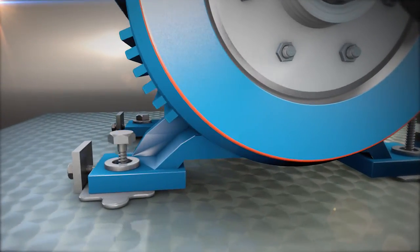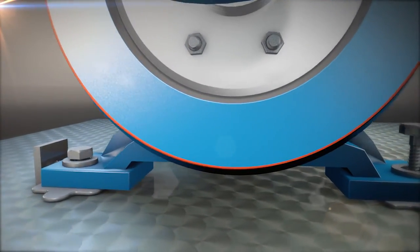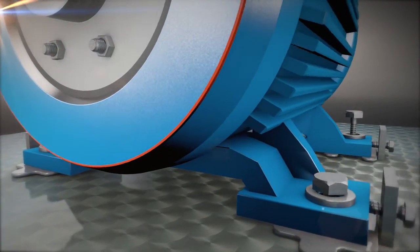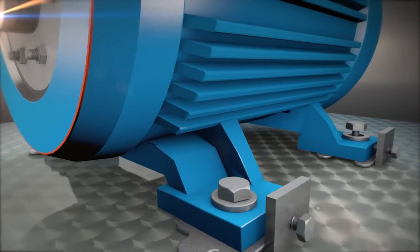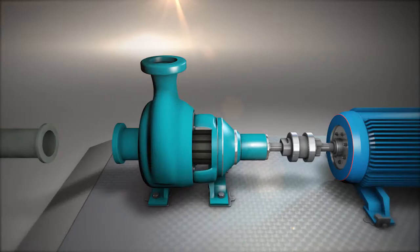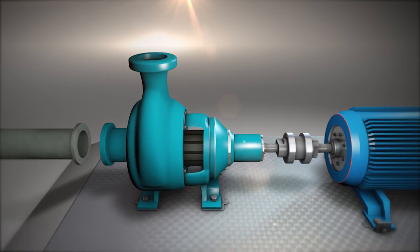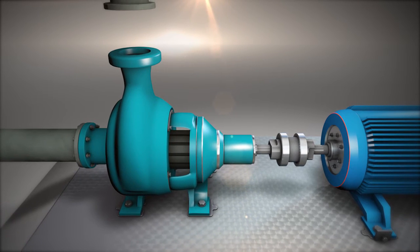Finally, all anchor bolts on the machines should be tightened to the proper torque. Likewise, all pipe fitting should be completed without imposing any stress on the machines. When machinery is properly installed and given reasonable maintenance, the asset's operating life should meet or exceed its life expectancy.